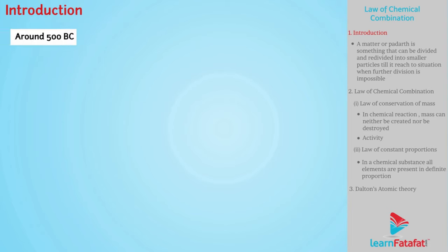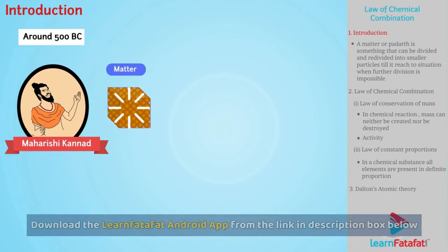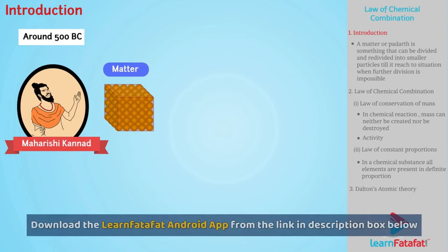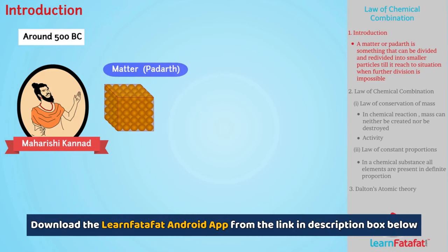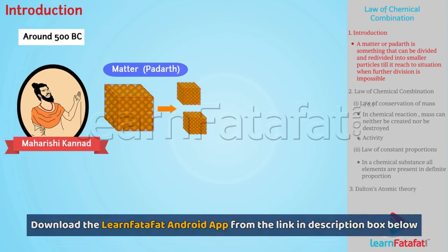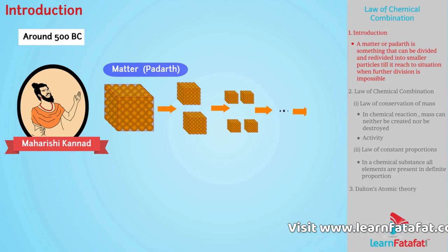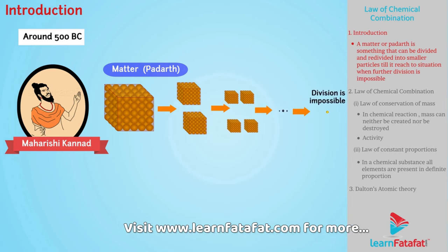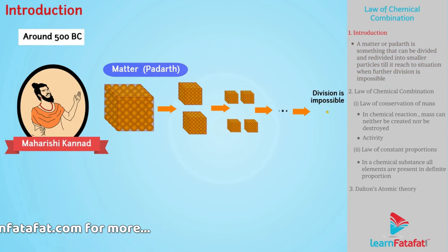In ancient times, there lived a philosopher named Maharshi Kannar who presented an interesting fact about matter. According to his theory, a matter or padarth is something that can be divided and redivided into smaller particles till it reaches a situation when further division is impossible. This smallest particle was named Parmanu.